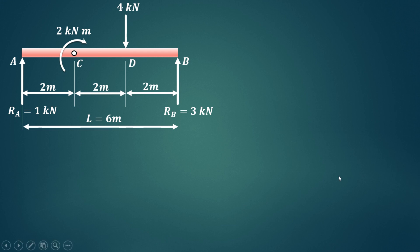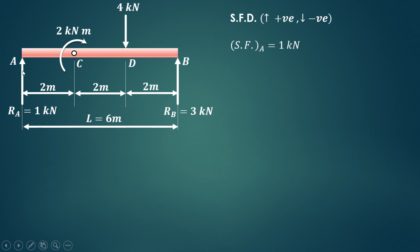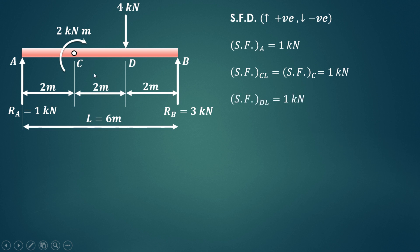Now we draw the shear force diagram. The convention is upward forces are positive and downward forces are negative. Shear force at A is plus 1 kN due to the upward reaction. No force acts between A and C, so the shear force remains 1 kN at C and up to just left of D.